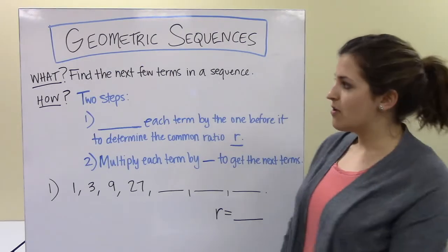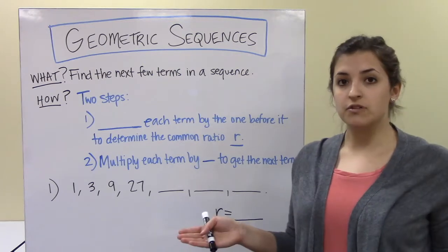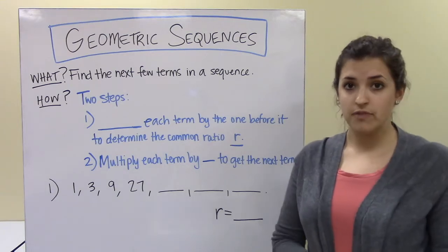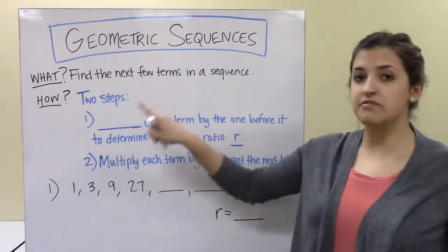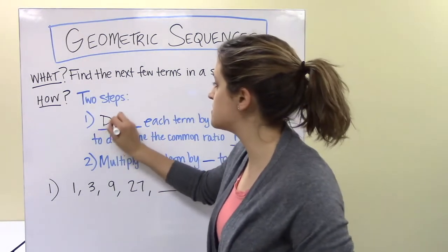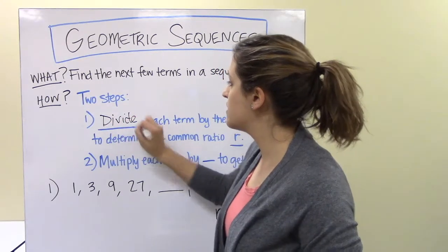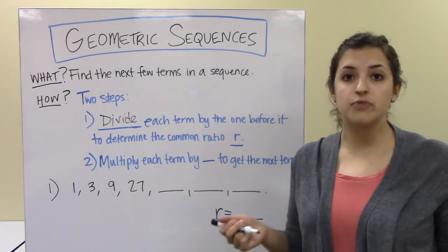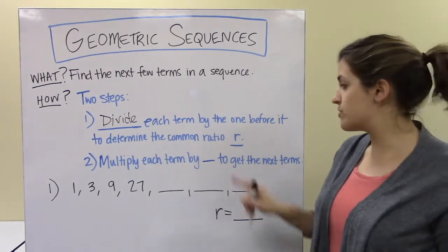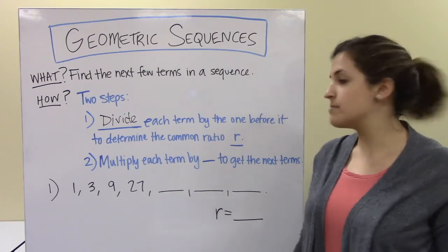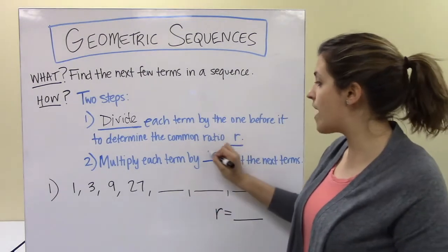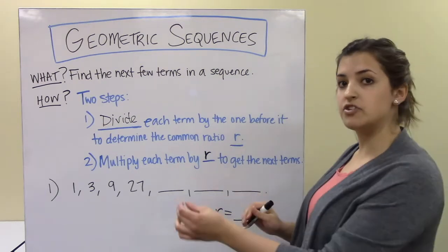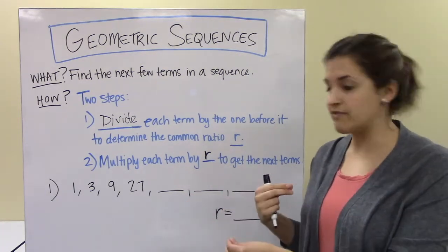Here's our first task: we want to find the next few terms in a sequence. There are two steps we need to follow. The first step is to divide each term by the term before it to determine our common ratio — we'll call this r. The second step is to multiply each term by r to get the next term.